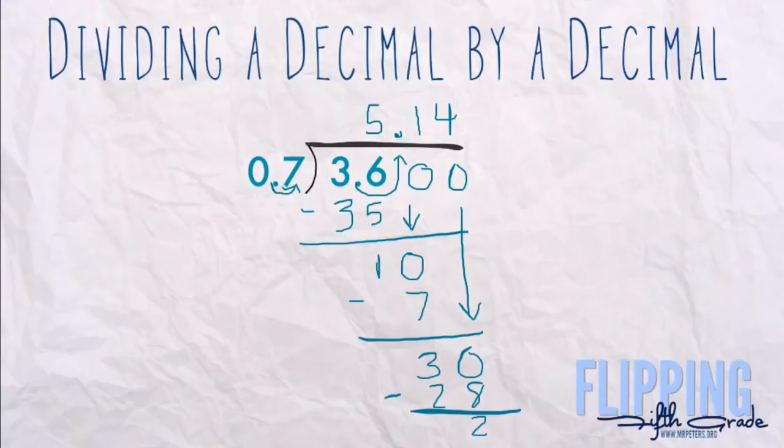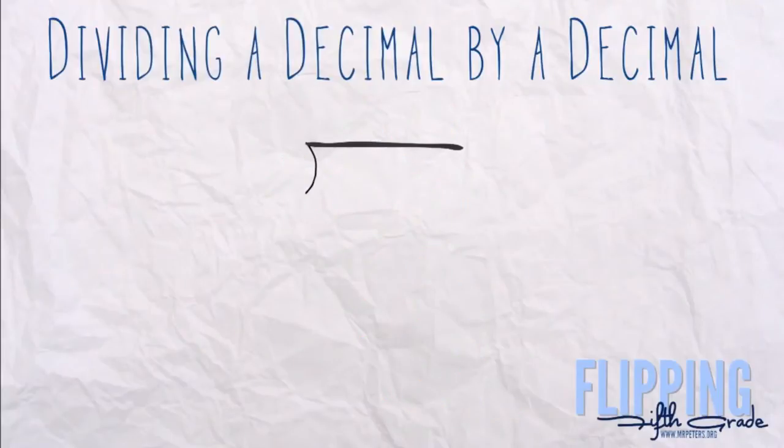Let's look at another example. All right, this one is 17.8 divided by 3.1. So again, start by moving the decimal one place over, making that a 31 and this a 178, bringing that decimal right up to the top. You can add another zero here right away if you'd like.